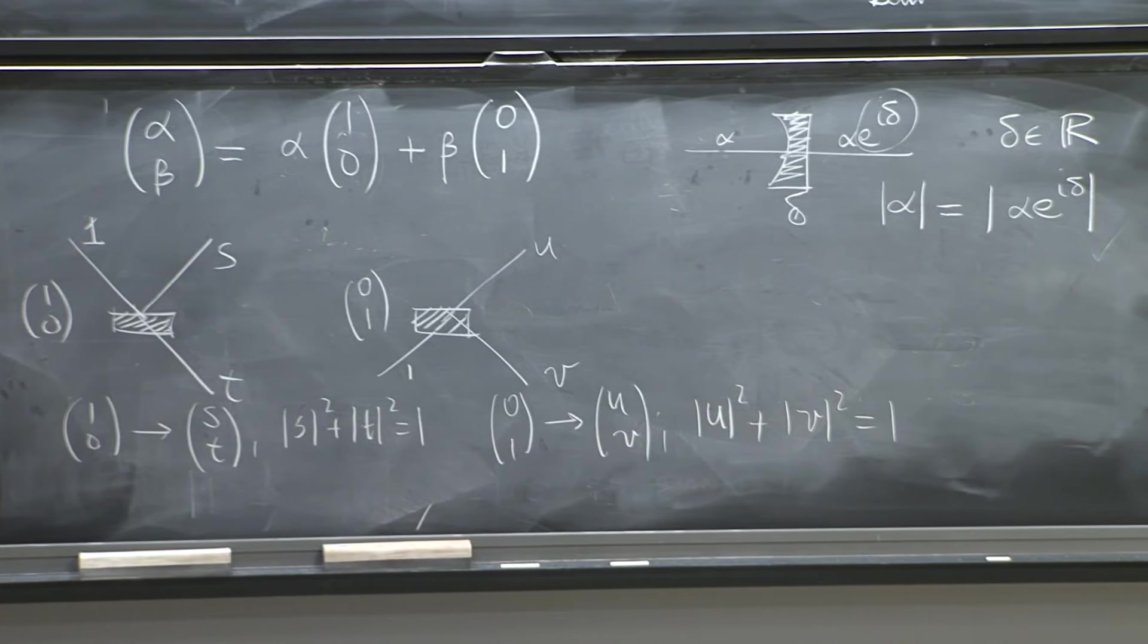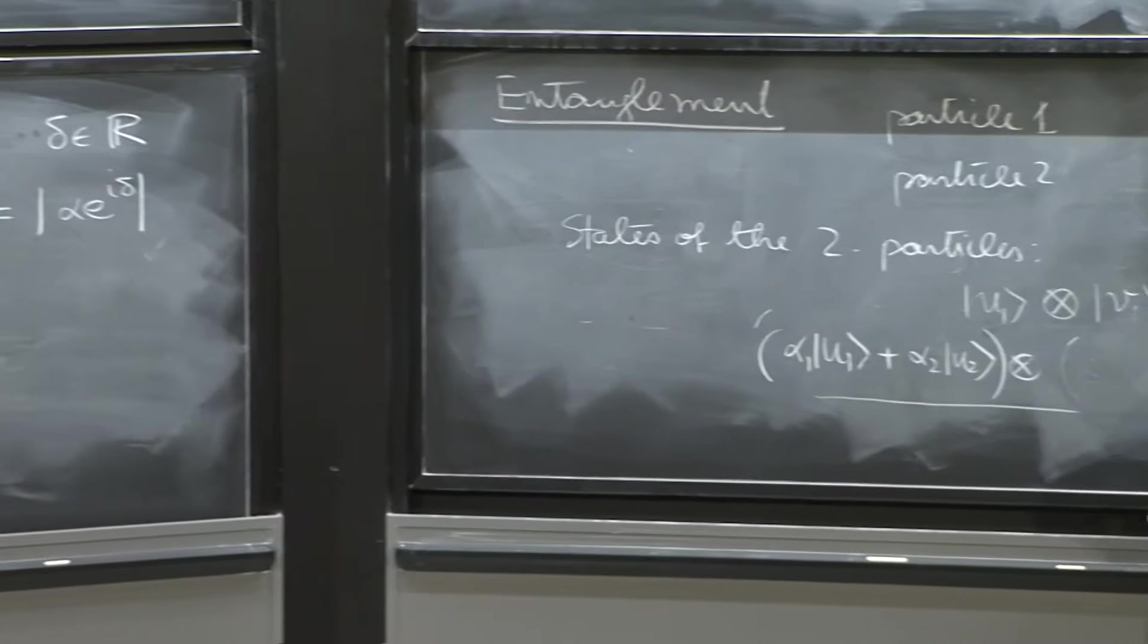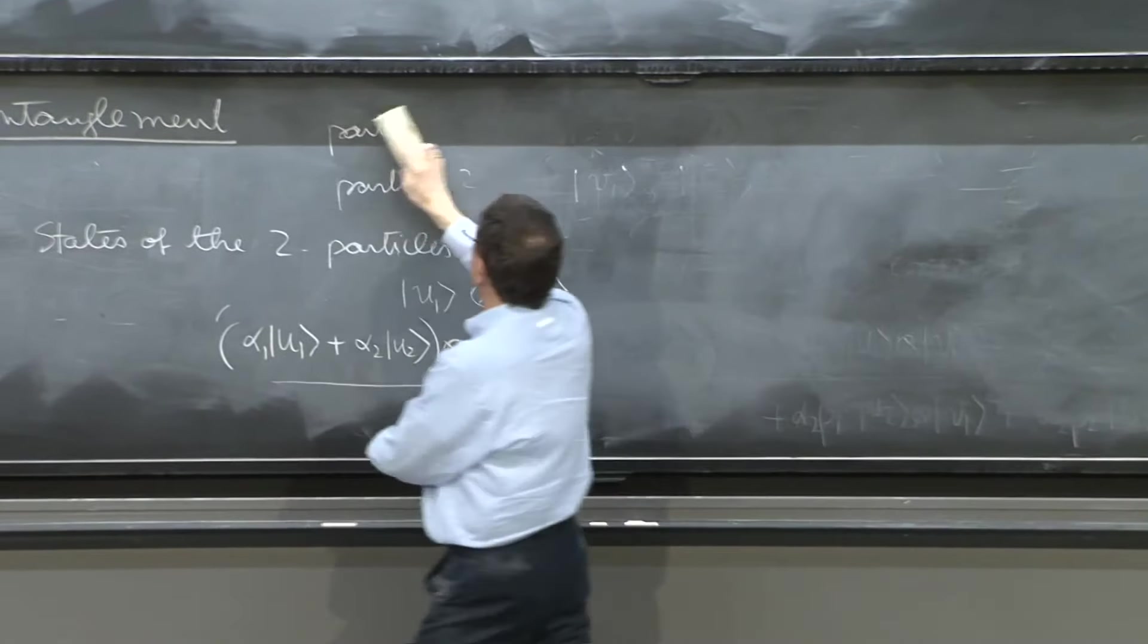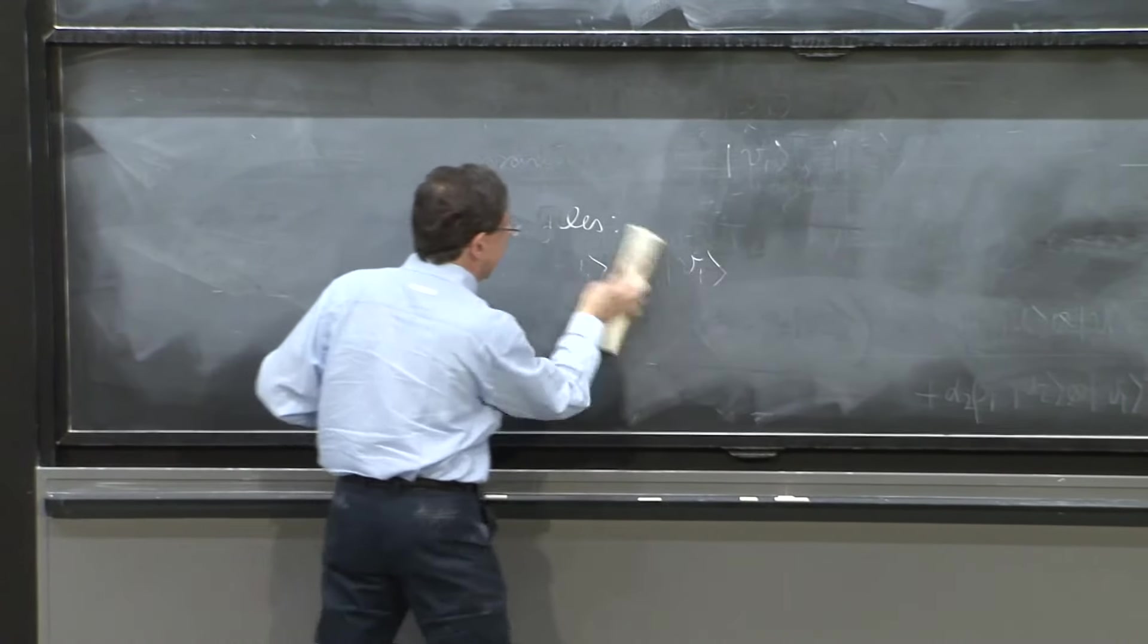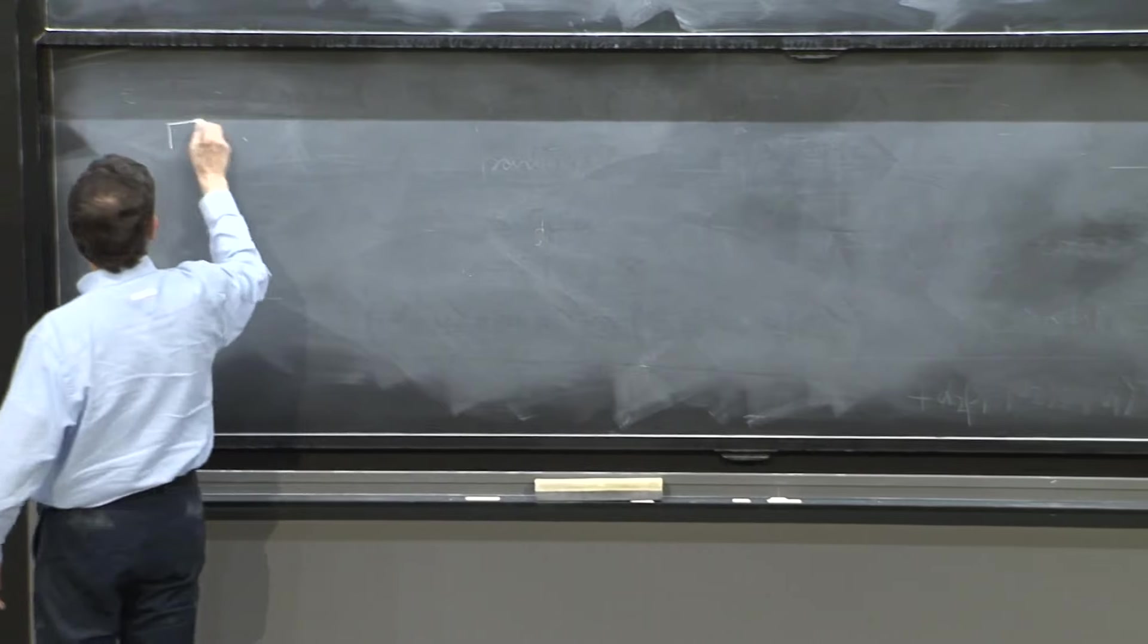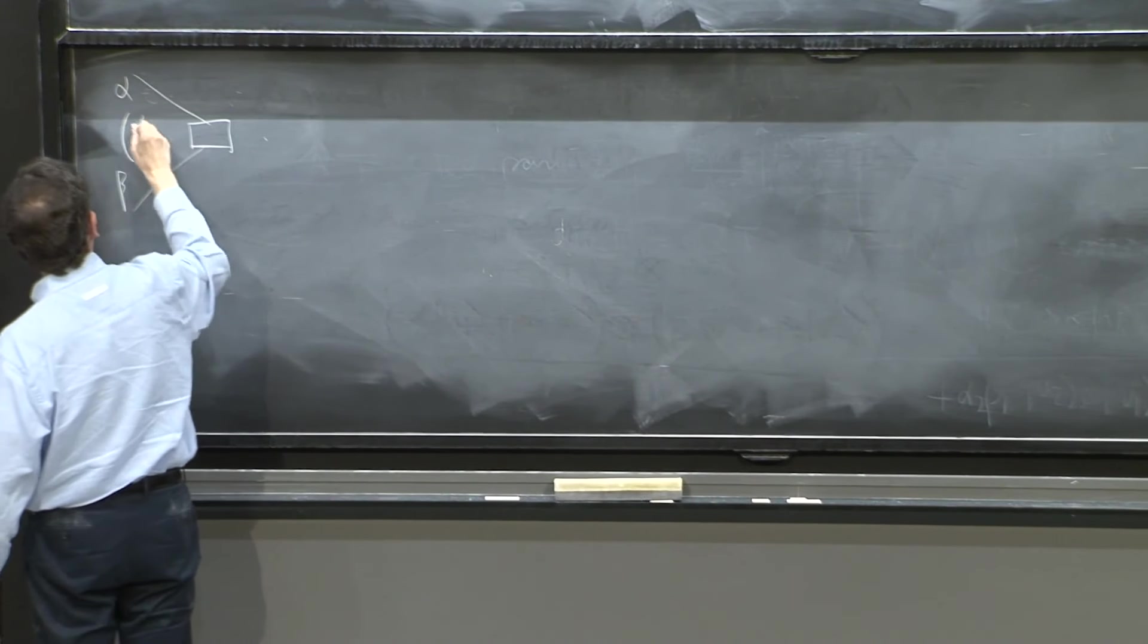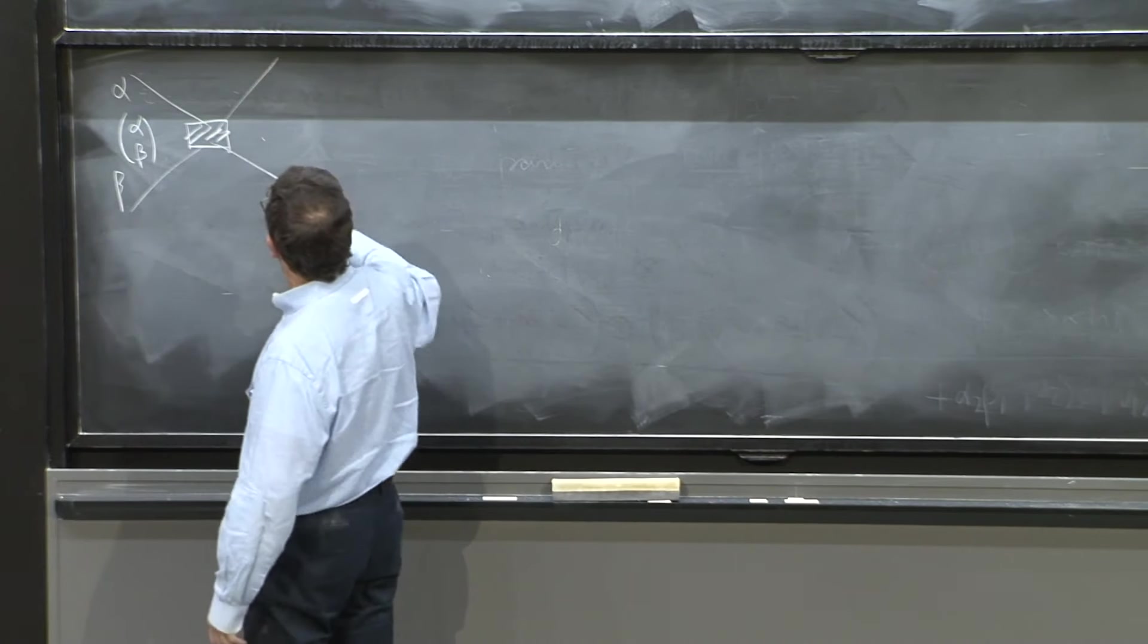Well, why do we need really four numbers? Because of linearity. So let's explore that a little more clearly. And suppose that I ask you, okay, so what happens to an (alpha, beta) state, (alpha, beta) state, if it enters the beam splitter? What goes out?